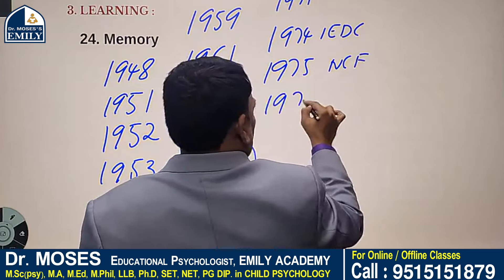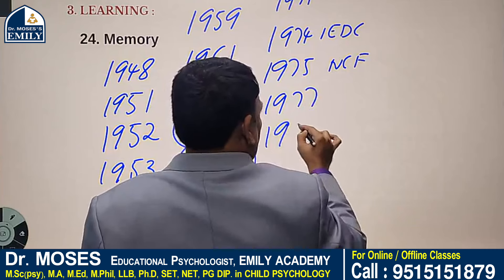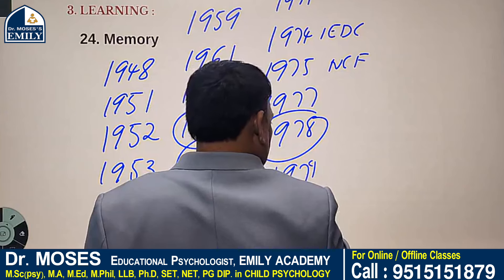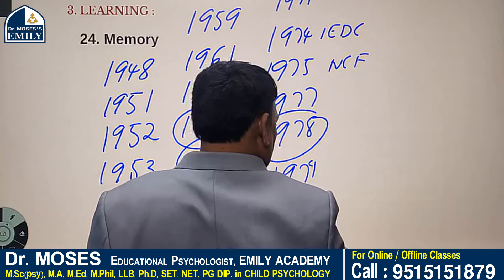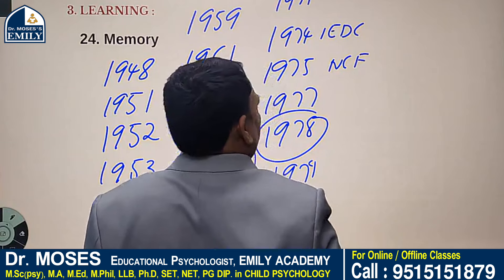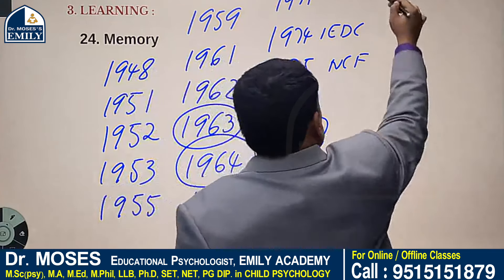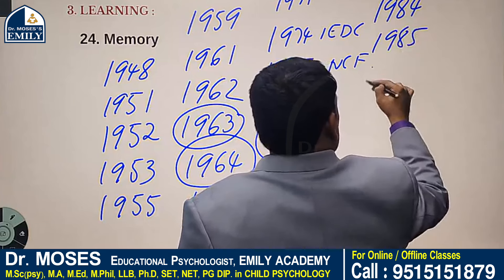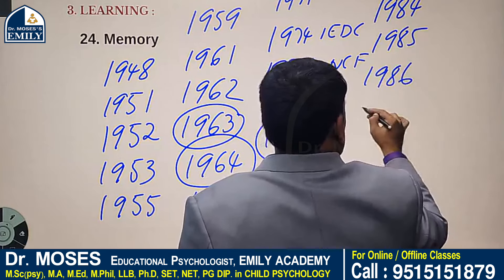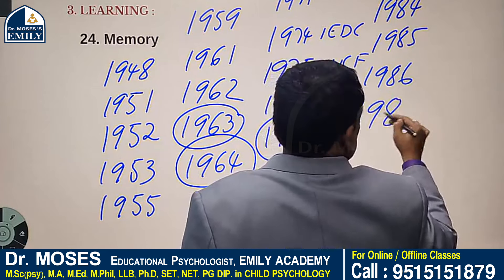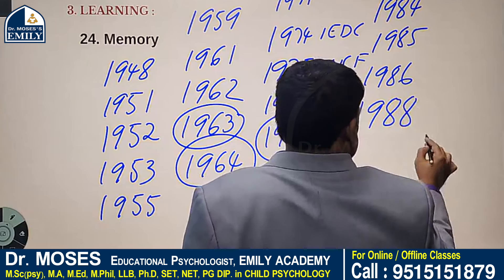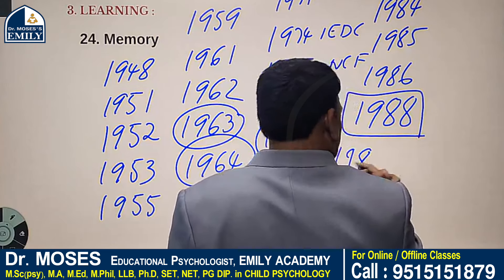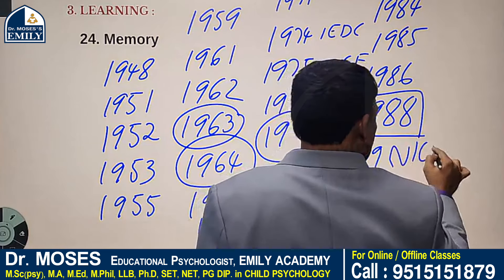1977: Ishwarbhai Patel Committee. 1978: Malcolm Adiseshaiah Committee. 1971: NEPA. 1982: Ambedkar Open University. 1983: Chattopadhyay Commission on Women's Teacher Education. 1984: CIET. 1985: SIET and IGNOU. 1986: New Education Policy. 1980: Adult Education Program. 1989: National Institute of Open Schooling.